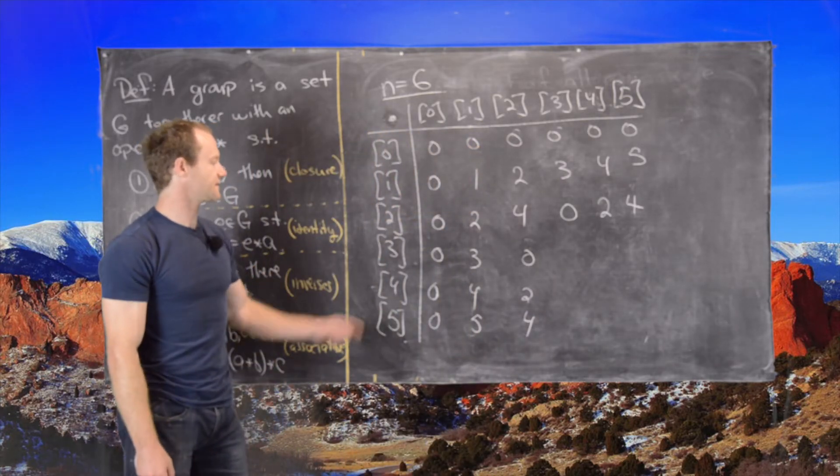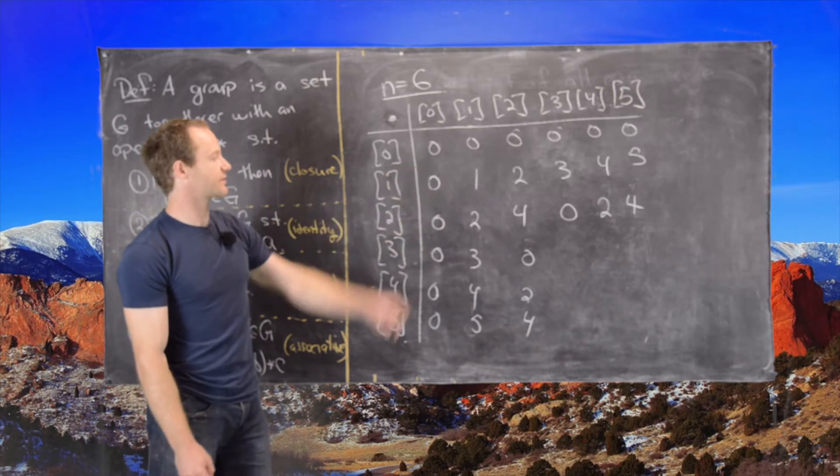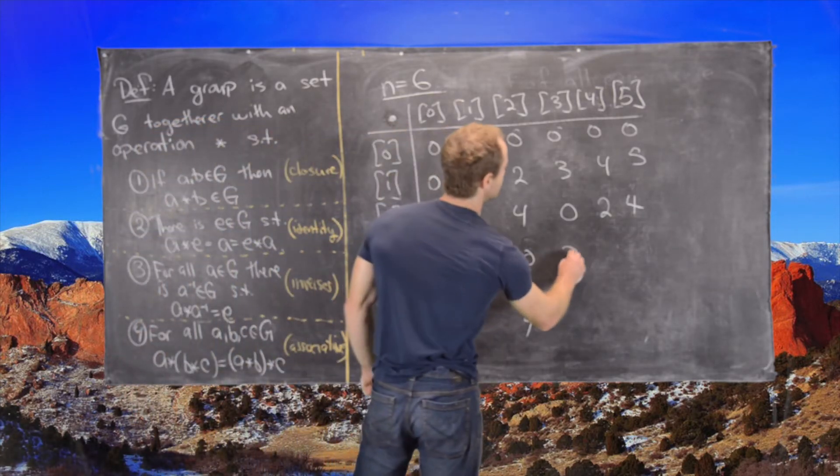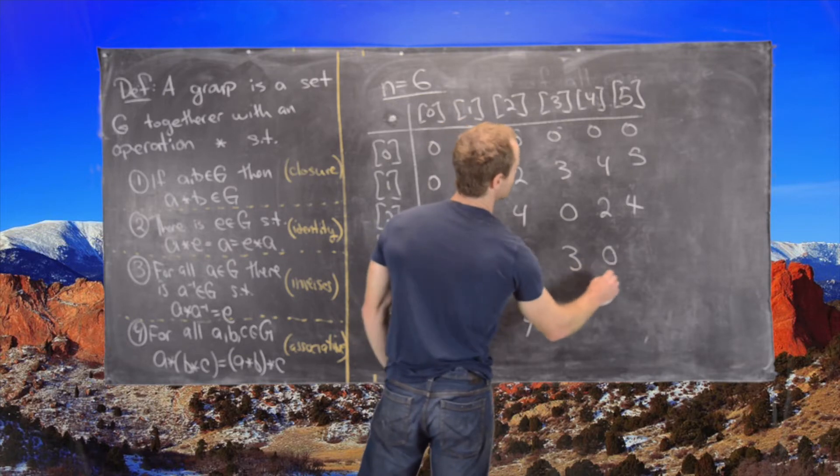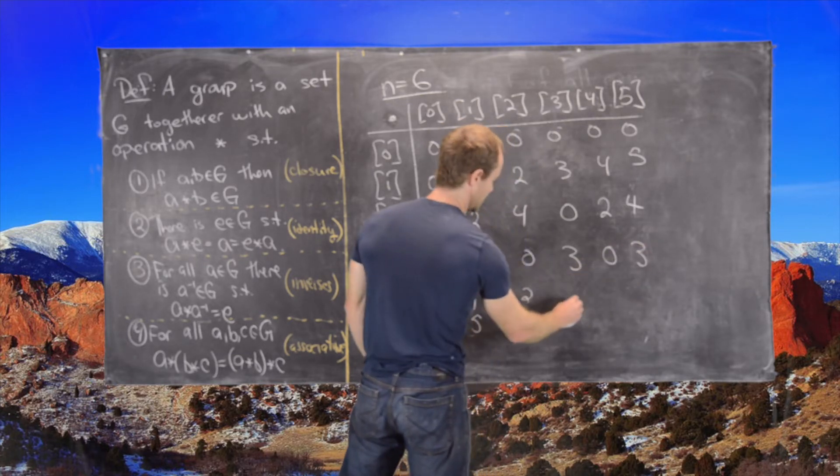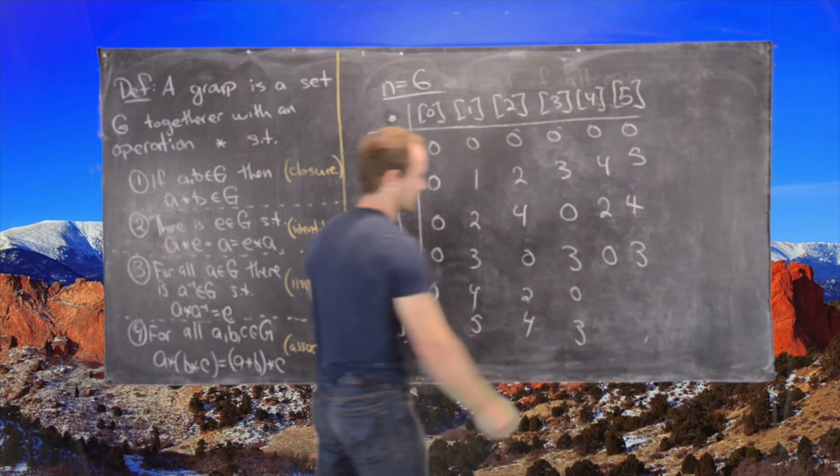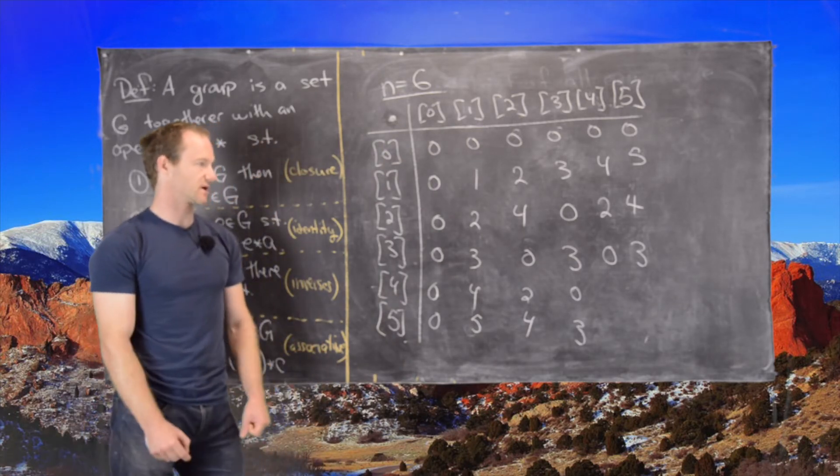Now let's finish it off. So 3 times 3 is 9, which is 3. 3 times 4 is 12, which is 0. 3 times 5 is 15, which is 3. And then we can put those entries in the column as well.